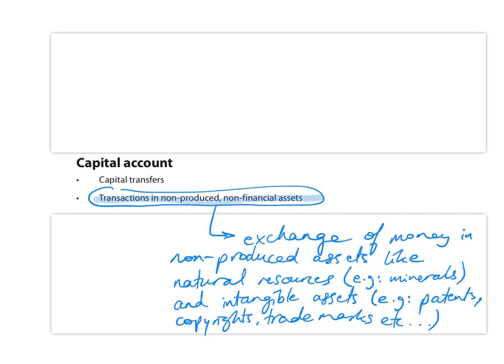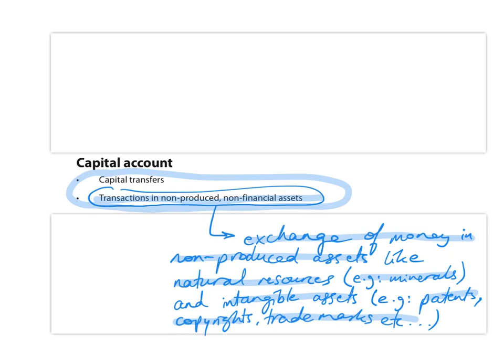The second sub-account of the capital account is transactions in non-produced non-financial assets. This refers to the exchange of money in non-produced assets — assets that are not produced, like natural resources such as minerals, and intangible assets like patents, copyrights, and trademarks. All of these are intangible, non-produced, and non-financial. These are the two sub-components of the capital account.